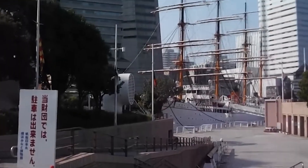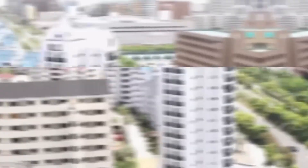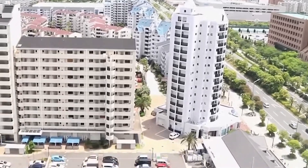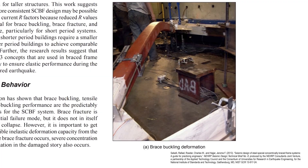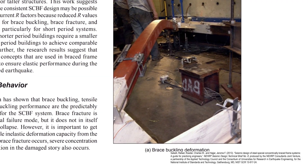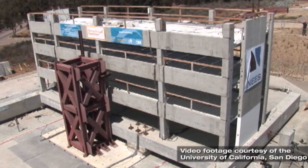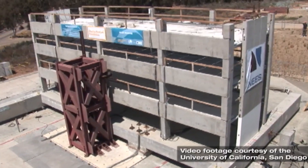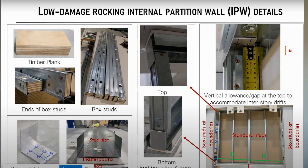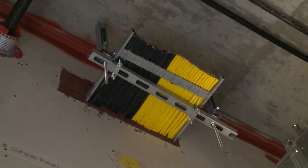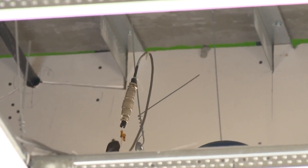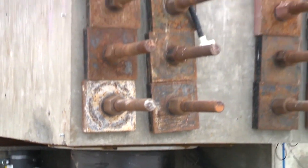The building materials used in construction should also be earthquake resistant. Reinforced concrete and steel are the most commonly used materials for this purpose as they have a high strength-to-weight ratio and are ductile, meaning they can deform without breaking. Non-structural components such as partitions, ceilings, and cladding can also play a significant role in the overall earthquake resistance of a building. These components should be securely attached to the structural system and designed to withstand the forces generated by an earthquake.